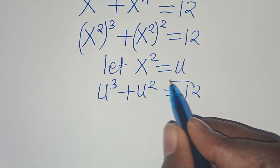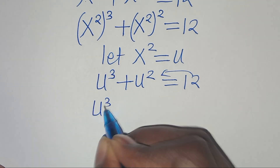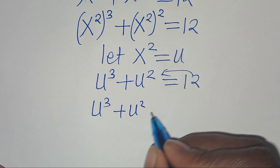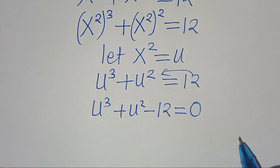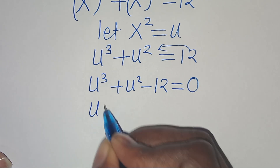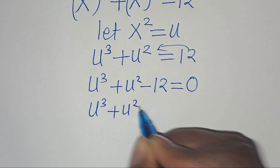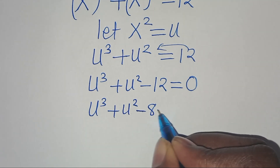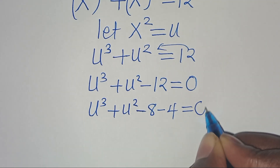This equals 12. Moving 12 to the left-hand side, we have u³ + u² - 12 = 0. We can split 12 as 8 plus 4, giving us u³ + u² - 8 - 4 = 0.